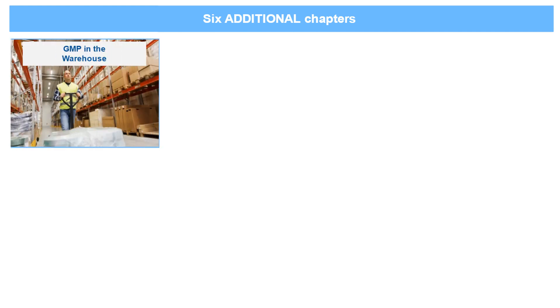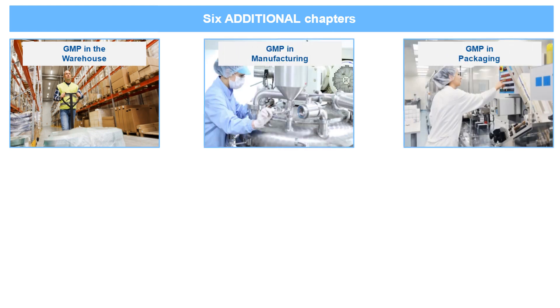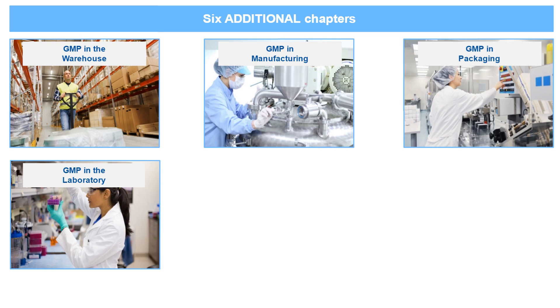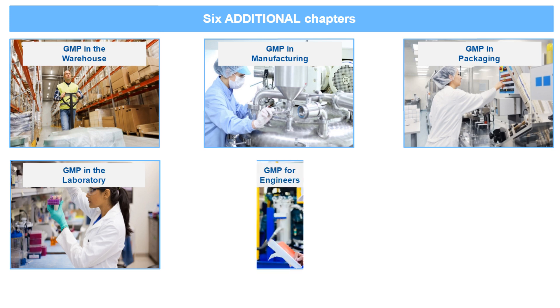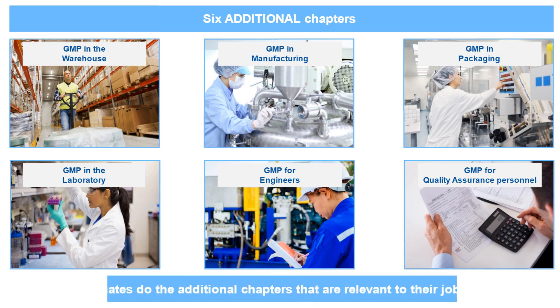Then there are six additional chapters specific to different parts of the facility. There is GMP in the warehouse, GMP in manufacturing, GMP in packaging, and GMP in the laboratory. These all cover specific requirements for people working in these areas. There is also GMP for engineers and GMP for quality assurance personnel. Delegates do the additional chapters that are relevant to their job role, and they can do more than one if necessary.